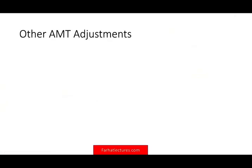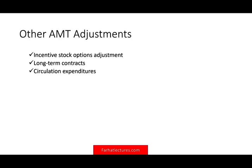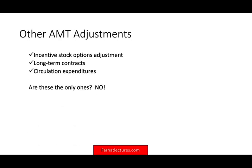So other AMT adjustments: one is incentive stock options, long-term contract, circulation expenditure — but those are not the only ones. There are many others, but those are the ones that if you understand them, you'll be good for the CPA exam. And if you understand how to deal with those adjustments, you can deal with any other adjustments down the road. Understanding is the key.